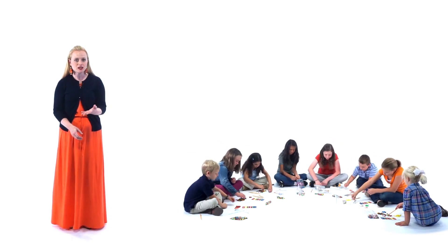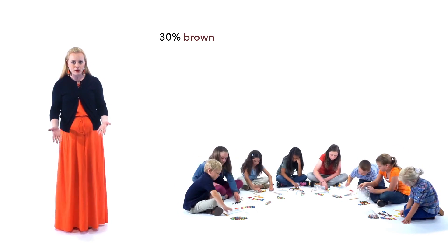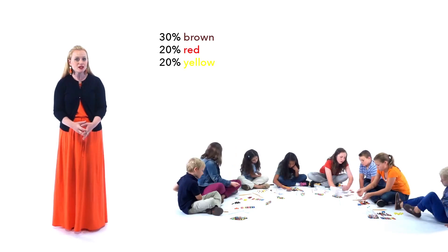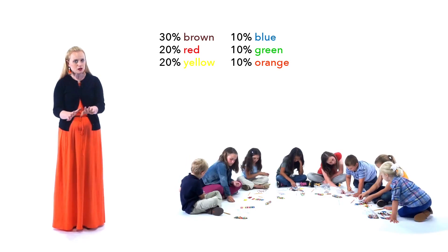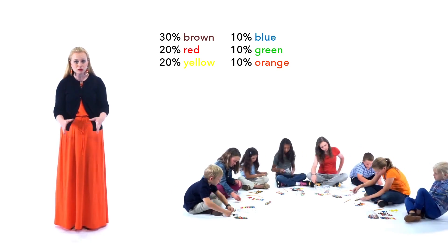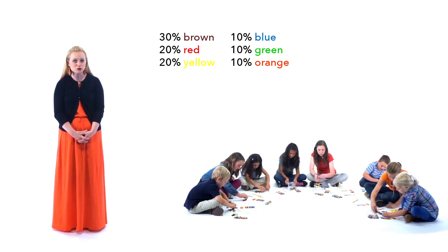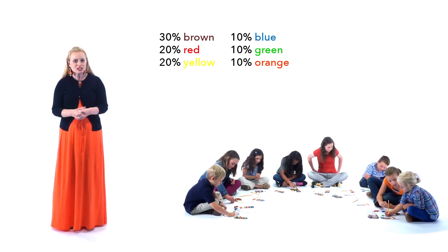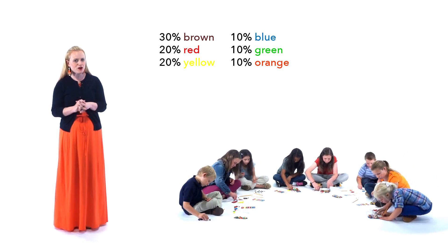The manufacturer says that we should have certain percentages in each bag. They say we should have about 30% brown, 20% red, 20% yellow, and the remaining three colors — blue, green, and orange — should be about 10% of the bag each. Now what I want you to do if you're participating is fill in your color chart, and then bag by bag see how close or how far off you are from those percentages. I think you'll be surprised that individual bags are not going to actually follow those percentages.